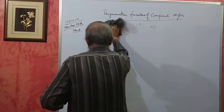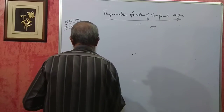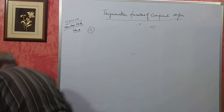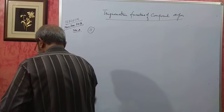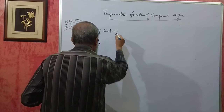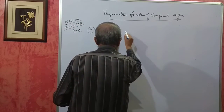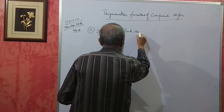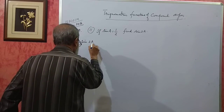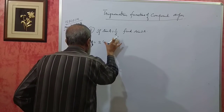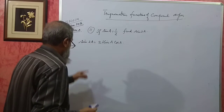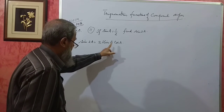Section B, problem number 11. If sinA = 1/2, find the value of sin2A. You know sin2A is 2sinA cosA. So if we want the value of sin2A, we should know the value of sinA and cosA. sinA is given but cosA we don't know.